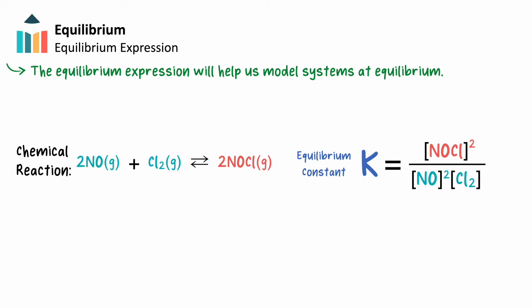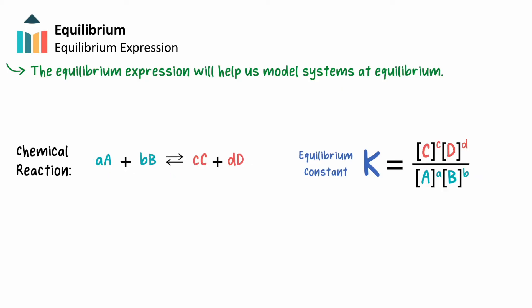In general terms, the expression for the equilibrium constant can be written for any balanced chemical equation in the following way, where lowercase a, b, c, and d are the balancing coefficients, and uppercase A, B, C, and D are the formulas for the reactants and products, respectively.